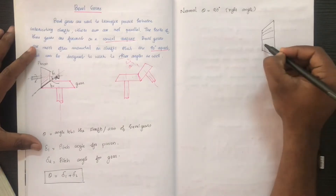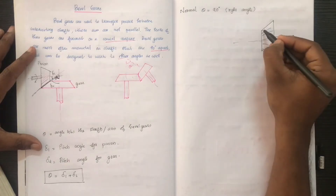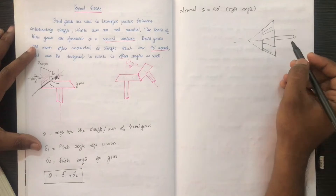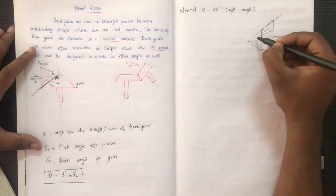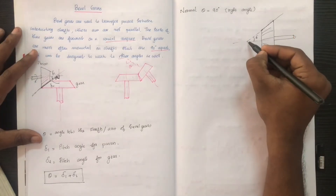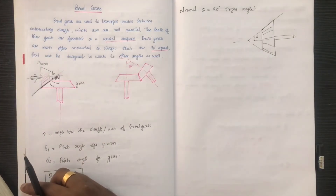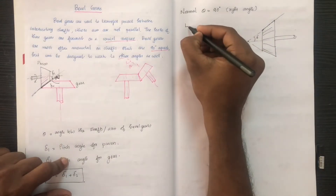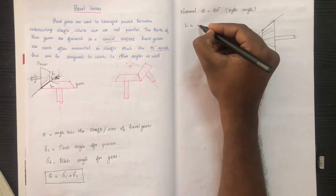Above the conical surface we are generating the teeth. The teeth are generated on this surface. This is the axis of the shaft. If you extend the axis of the shaft, this is the regular intersecting surface. This is delta. One point is where the axes meet.